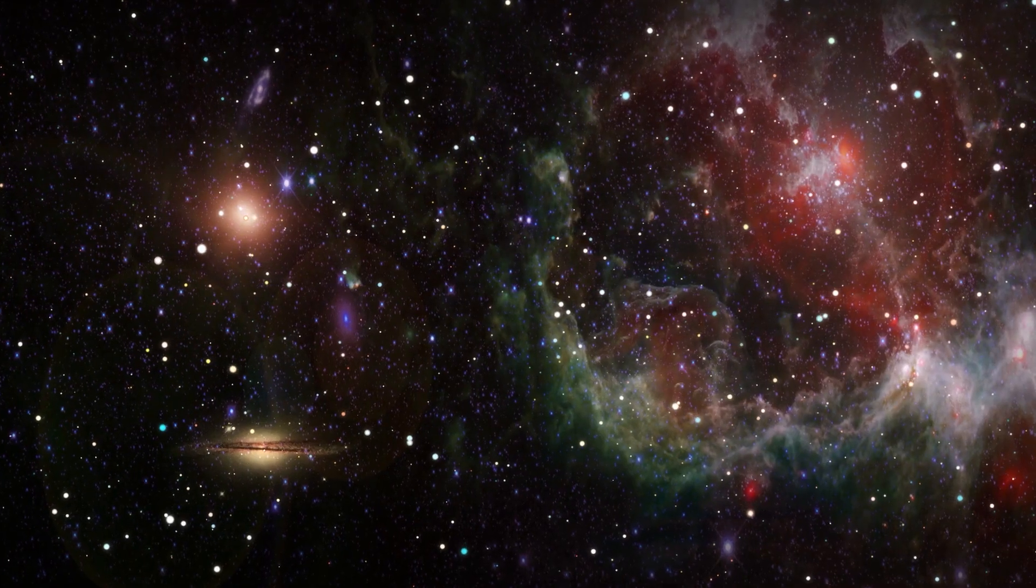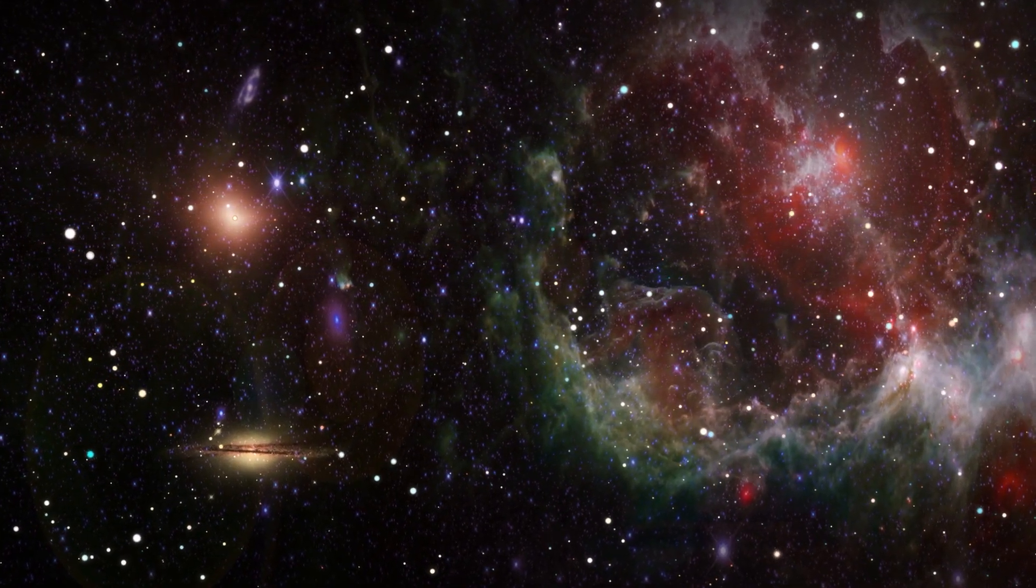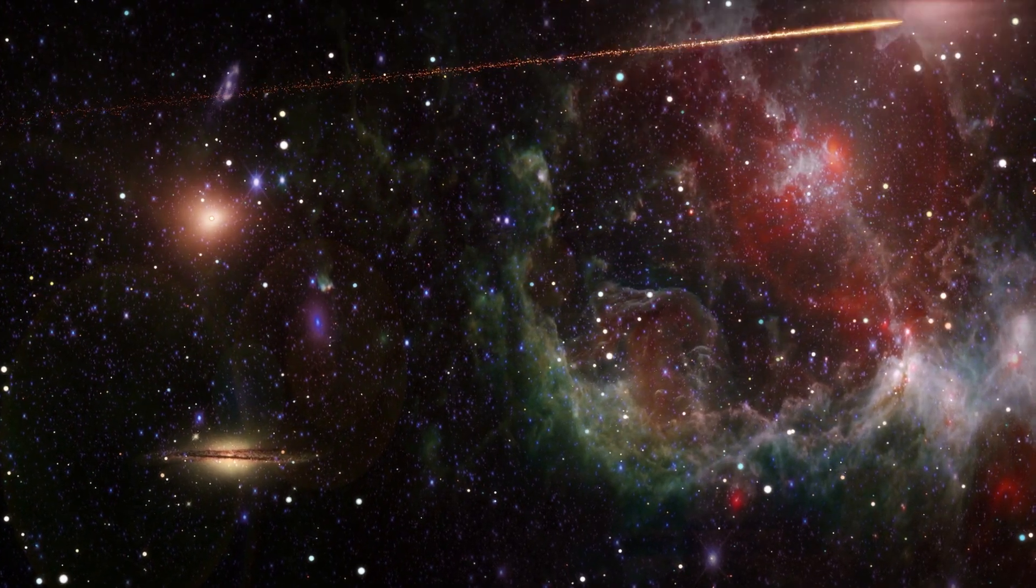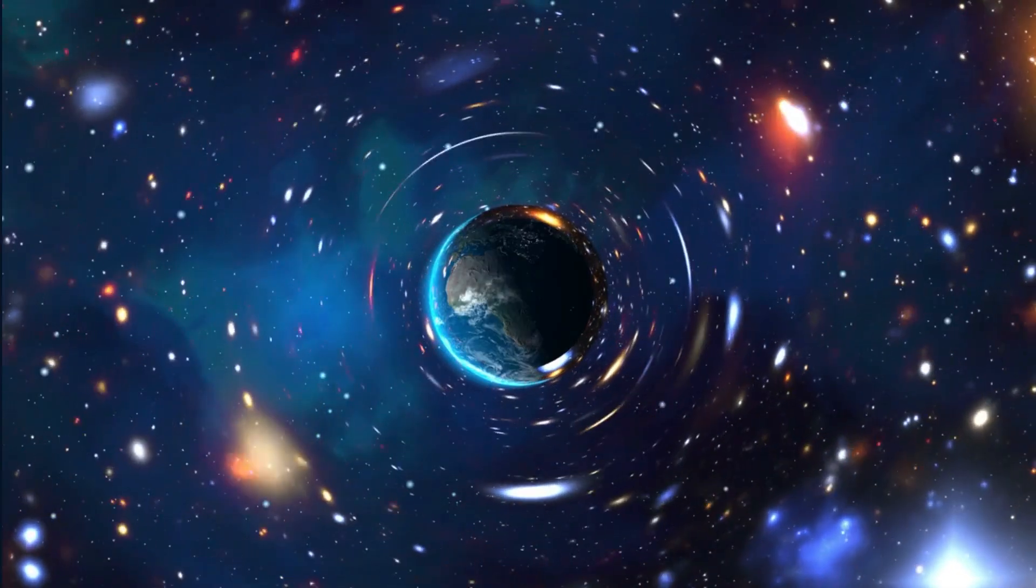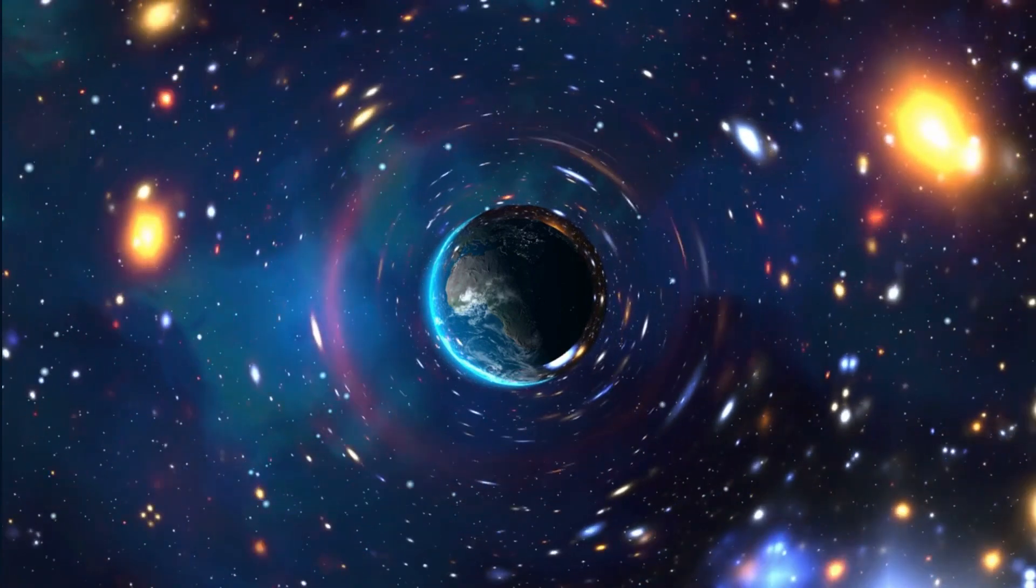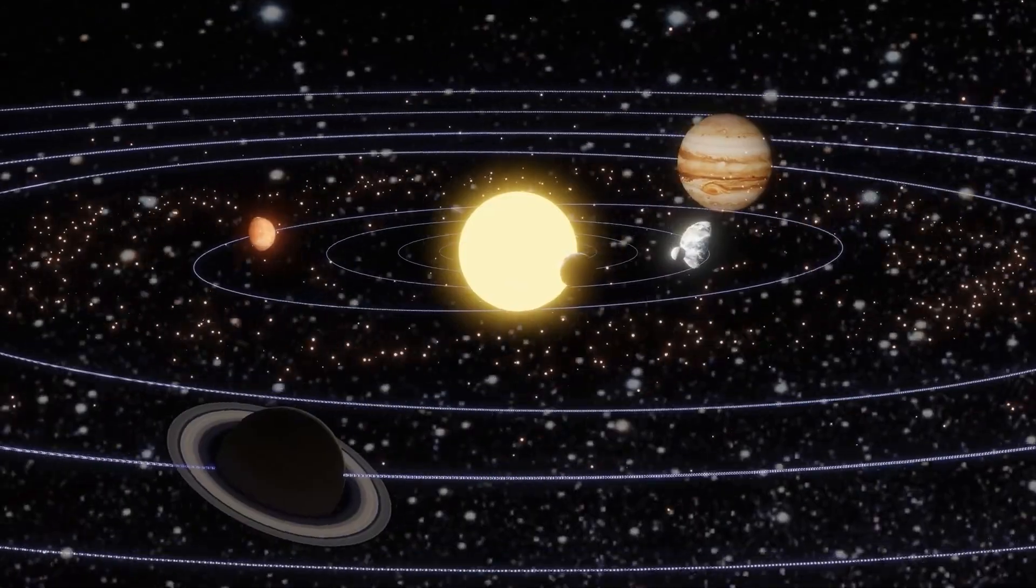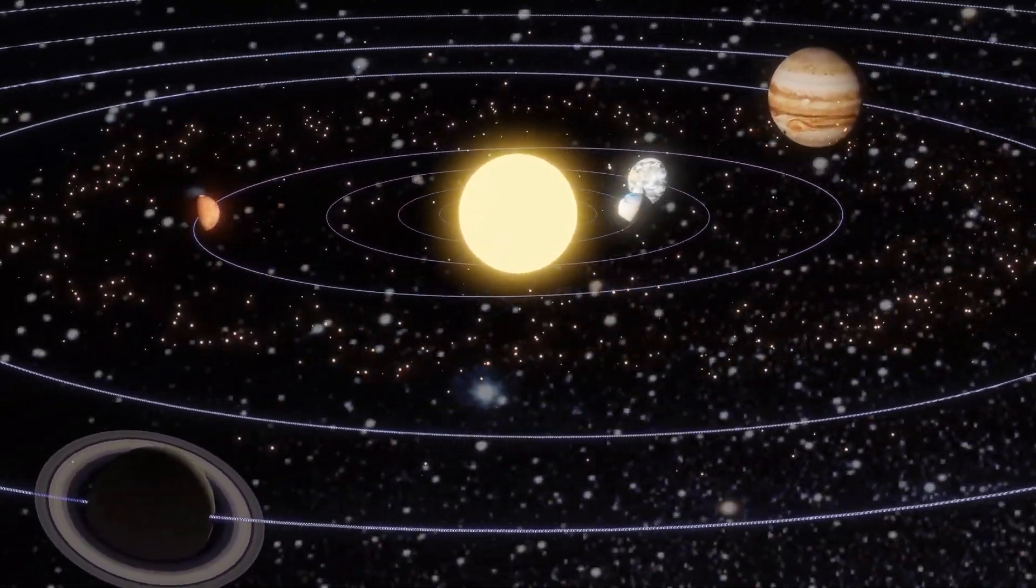The discovery of exoplanets has revolutionized our understanding of the universe and expanded our search for extraterrestrial life. The newly discovered exoplanet Wolf 1069 b is located just 31 light years away from Earth, making it one of the closest exoplanets to our solar system.